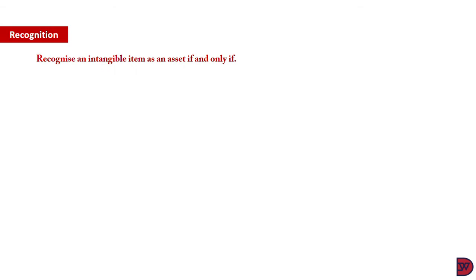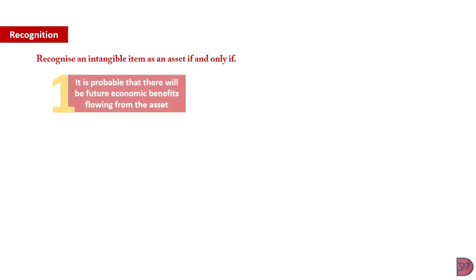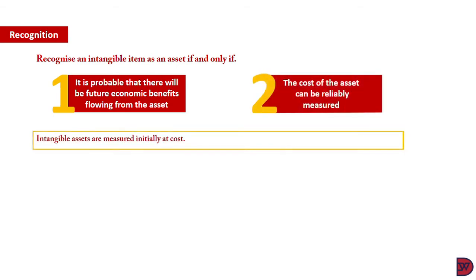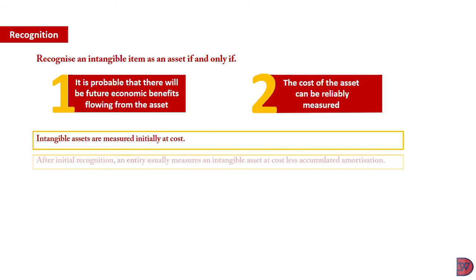Any expenditure on an intangible item is recognized as an asset if and only if it is probable that there will be future economic benefits from the asset, and secondly, the cost of the asset can be reliably measured. Intangible assets are measured initially at cost. So after initial recognition, an entity usually measures an intangible asset at cost less accumulated amortization or impairment.